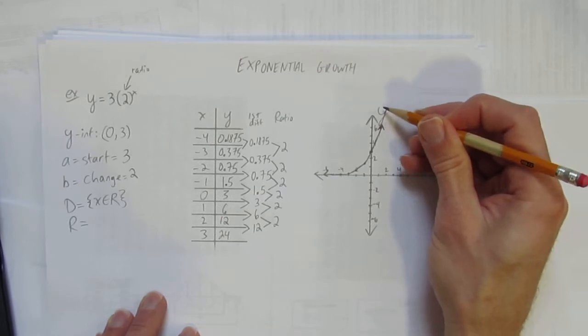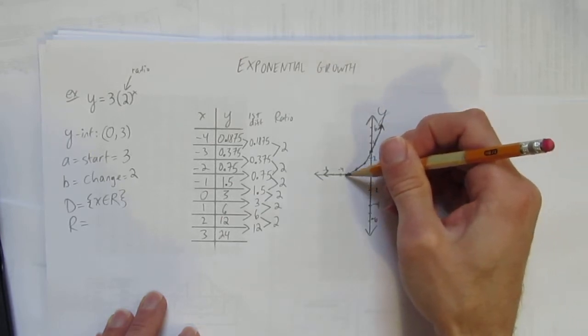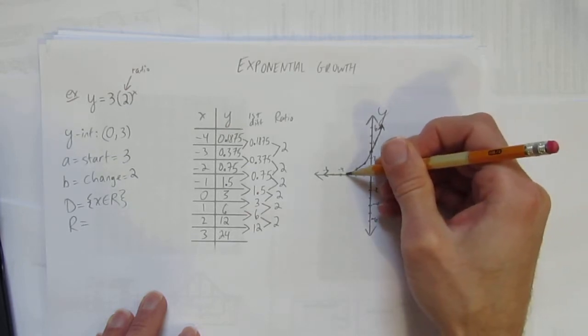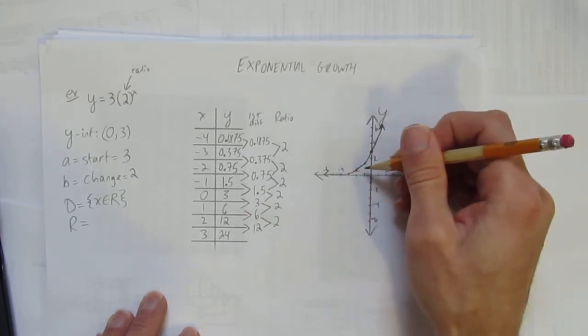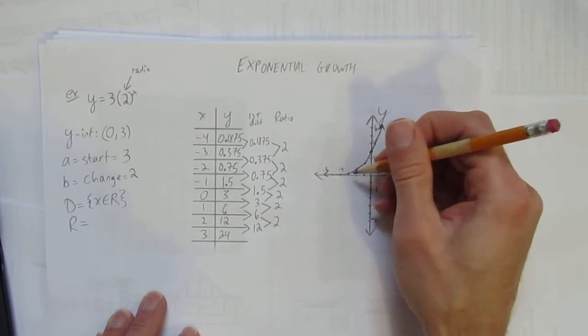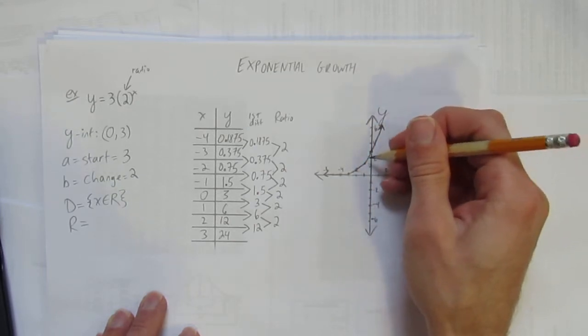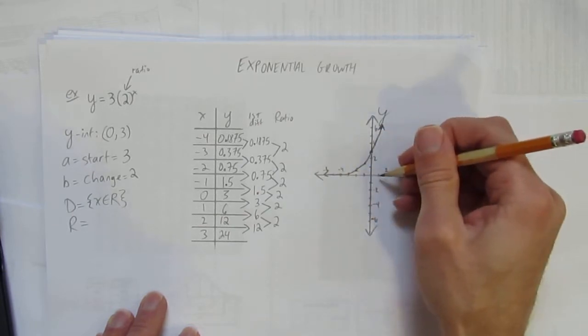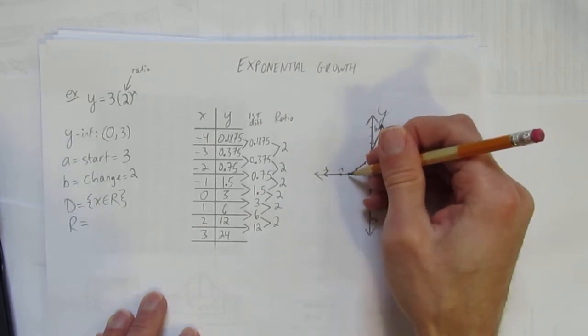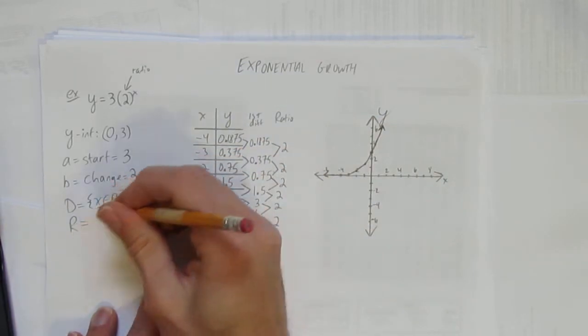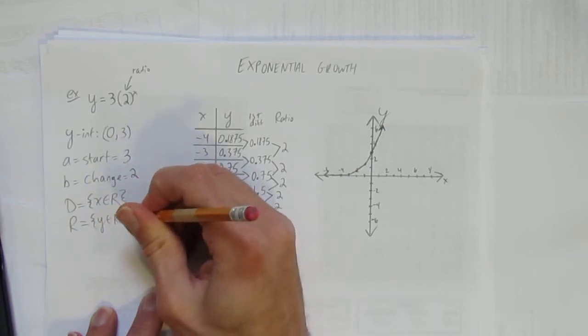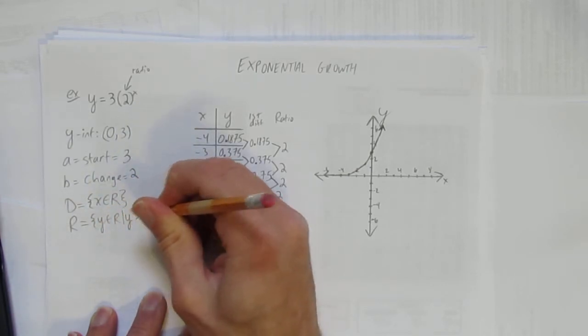What's the range of this thing? Well, it goes up forever, but it never quite touches zero. This invisible line, the x-axis, is the equation y equals zero, and it never quite touches zero. So we want to say you can be any number except you must stay above zero. That limit is called an asymptote—it's a line that it approaches but never actually touches. Let's say the range is the set of y is an element of the real numbers such that y must be greater than zero.